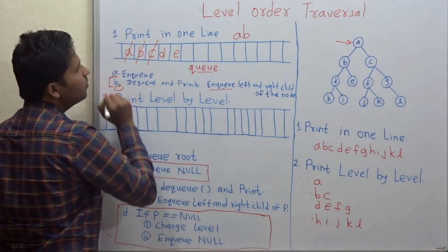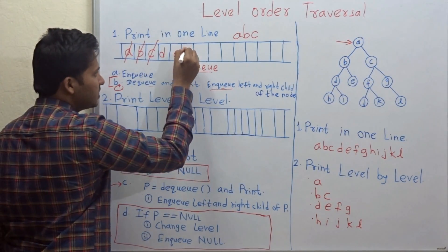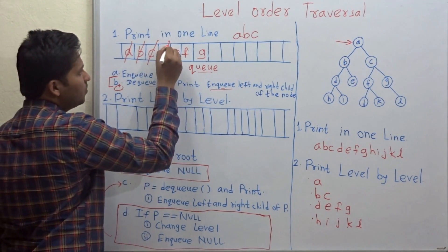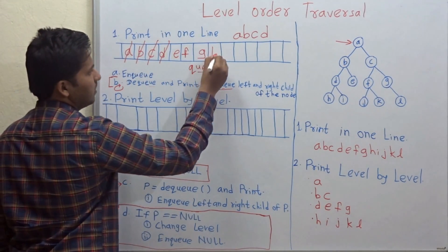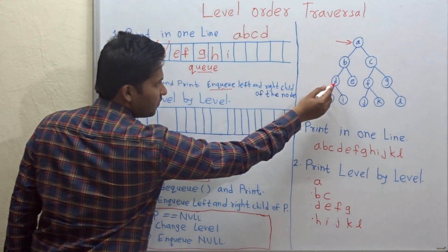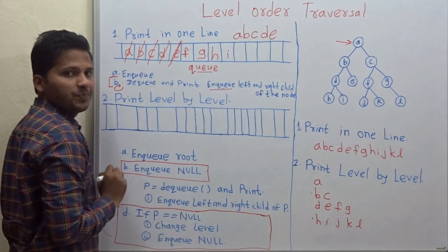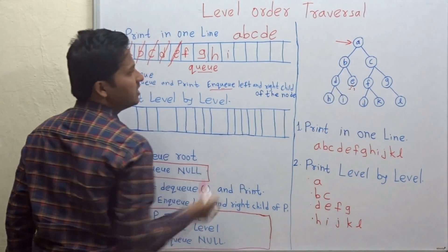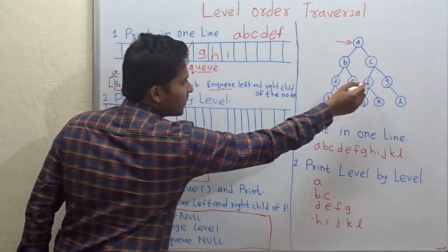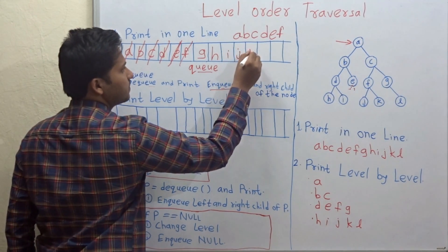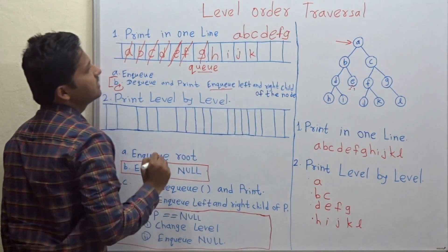Again dequeue and print B, then enqueue the left and right child of B, which are D and E. Again dequeue C and print it — the left and right child of C are F and G, so enqueue them. Again dequeue D and print — the left and right child of D are H and I, so enqueue them. Dequeue E and print — there is no left and right child, so no need to enqueue anything.